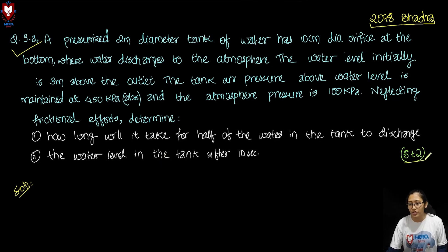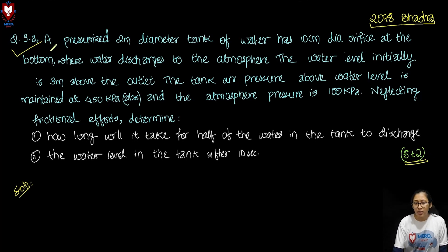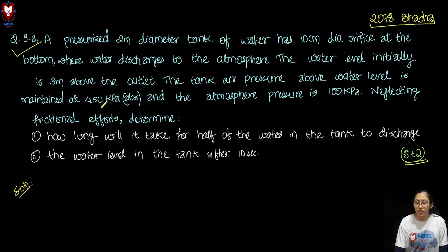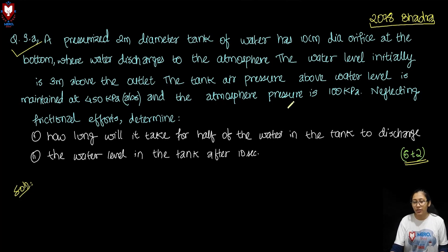This question is worth 6 plus 2 marks. The question reads: A pressurized 2-meter diameter tank of water has a 10 cm diameter orifice at the bottom, where water discharges to the atmosphere. The water level initially is 3 meters above the outlet. The tank air pressure above the water level is maintained at 450 kilopascal — that is absolute pressure. Atmospheric pressure is 100 kilopascal.